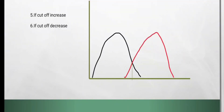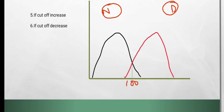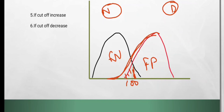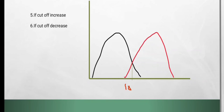Sometimes they give a graph-based question: the black graph is for the normal population and the red one is for the diseased population. Suppose the cutoff was 100 to label someone as diseased. This side of the graph represents false positives — the people are healthy but they tested positive due to the cutoff. This side represents false negatives — the people were diseased but they tested negative due to the cutoff.